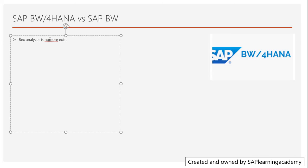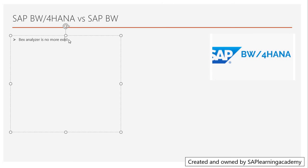So what do we use in place of Bex Analyzer? We have to use other tools like Fiori, Design Studio, or BO. Since Bex Analyzer is not available, we cannot see any Bex reports anymore. We now have to switch to other reporting options like Analysis for Office, Design Studio, BO, or the newest version — the analytical views in the cloud.